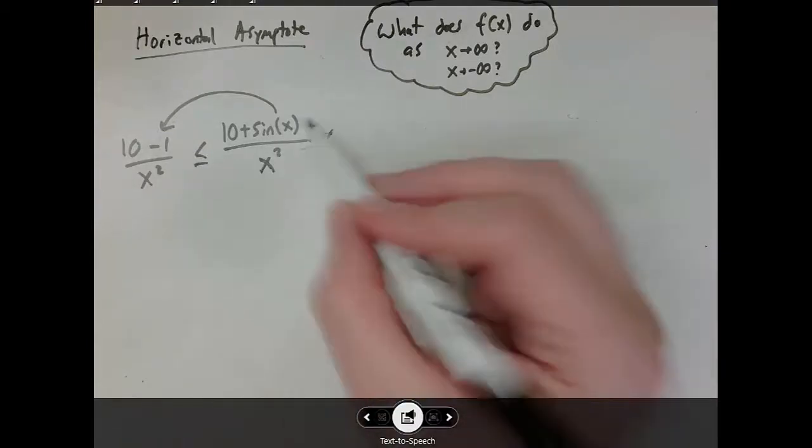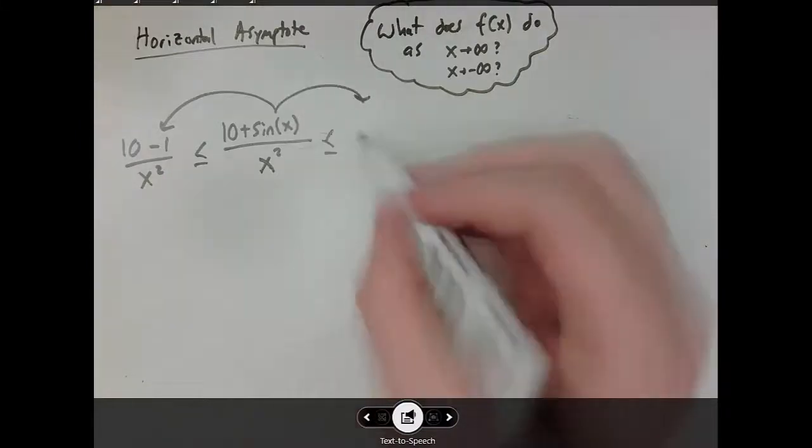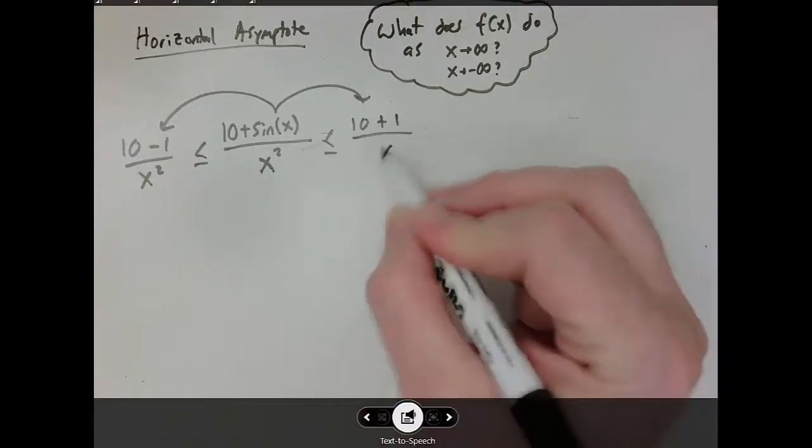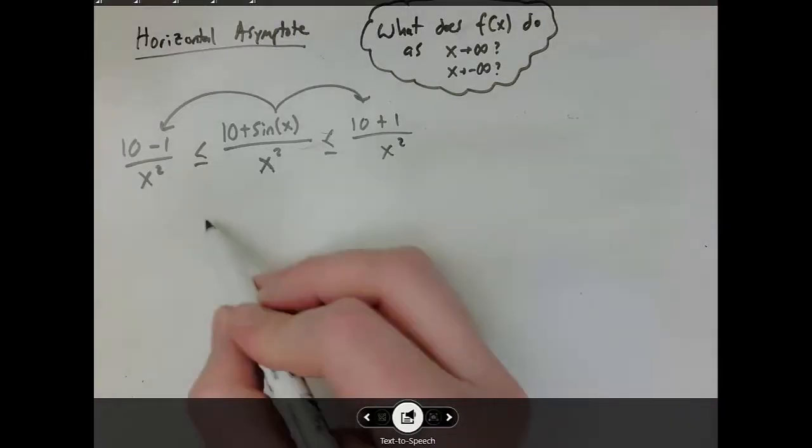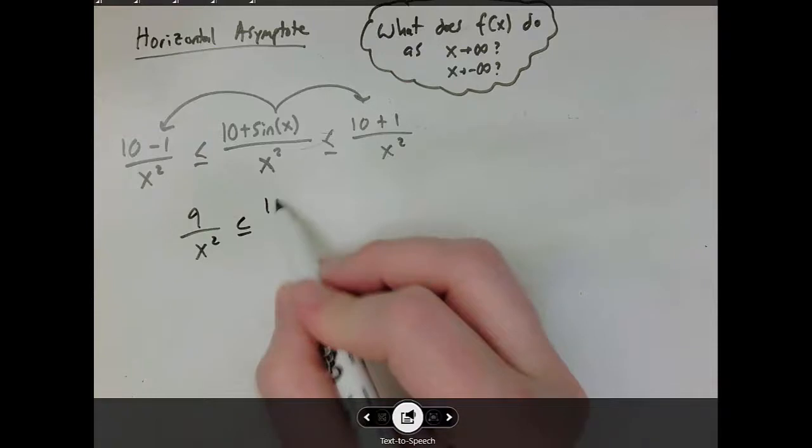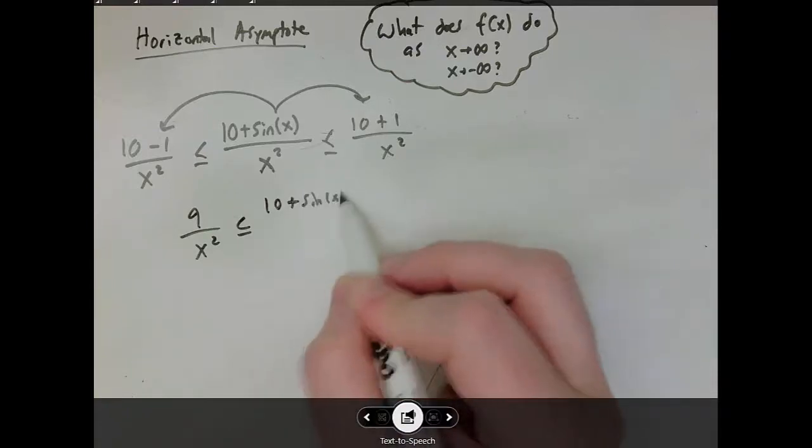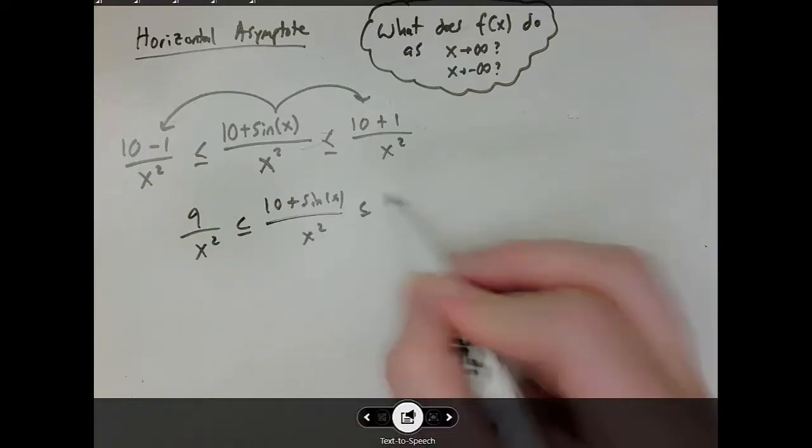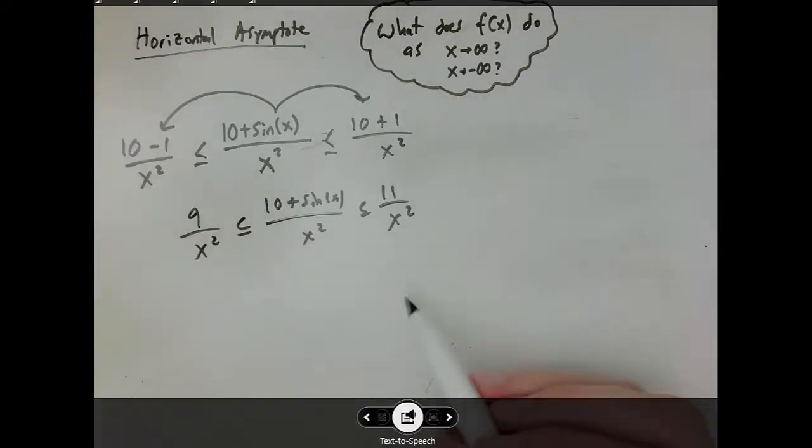And for a similar reason, I know it's always smaller than or equal to 10 plus 1 over x squared. So here I've got 9 over x squared, and here I've got my mystery thing, and here I've got 11 over x squared. You know that as x gets larger, this is approaching zero, and this is approaching zero. And this one is always in between those two.